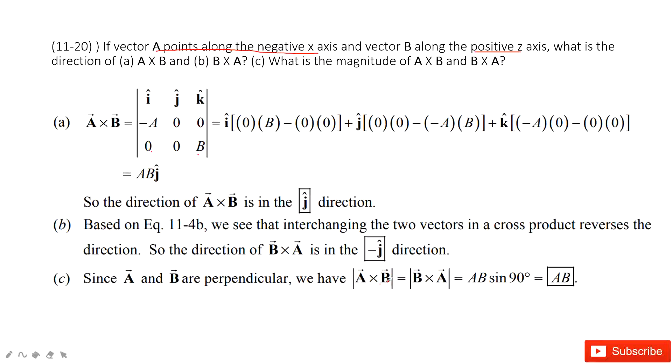We know that A cross B, the magnitude is AB sine 90 degrees. That's the sine theta between A and B. Since the angle between A and B is 90 degrees, sine 90 degrees is 1.